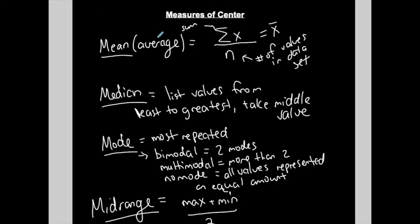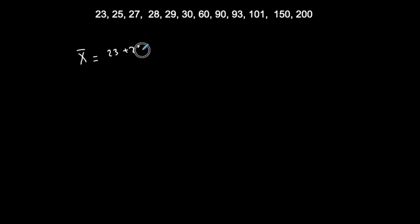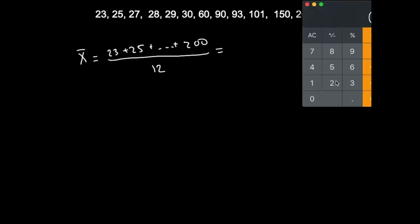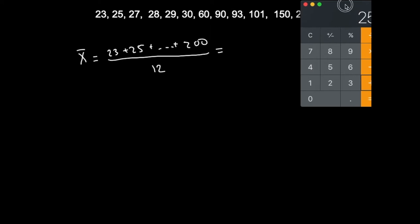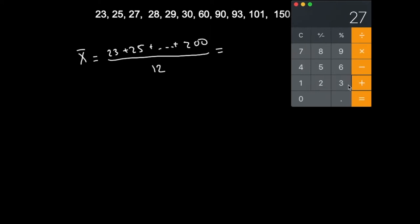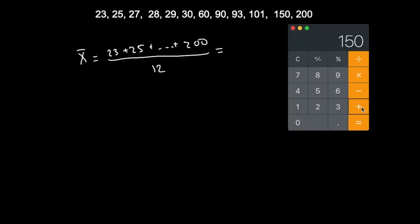According to the formula, we need to add up all the values — 23 plus 25, all the way to 200 — divided by n, the total number of data values. Counting them: 1, 2, 3, 4, 5, 6, 7, 8, 9, 10, 11, 12 — so divided by 12. Adding them all up: 23 + 25 + 27 + 28 + 29 + 30 + 60 + 90 + 93 + 101 + 150 + 200, the sum is 856.